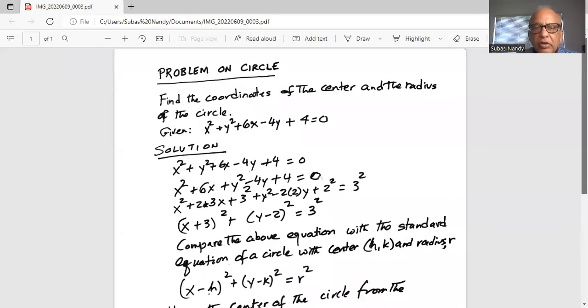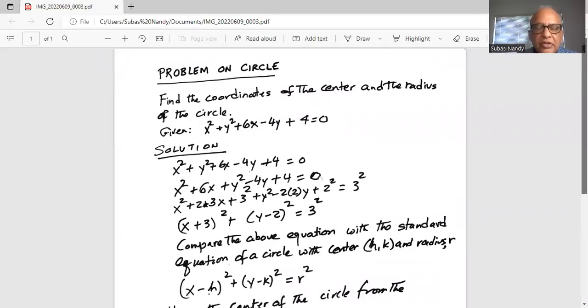This is a problem on circle. Find the coordinates of the center and the radius of the circle. The given equation is x squared plus y squared plus 6x minus 4y plus 4 equal to 0.